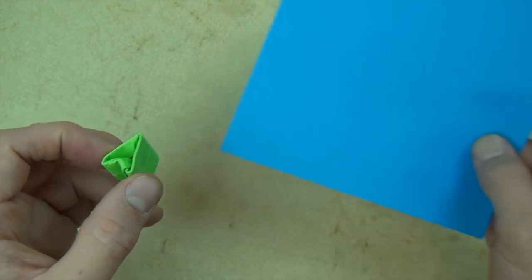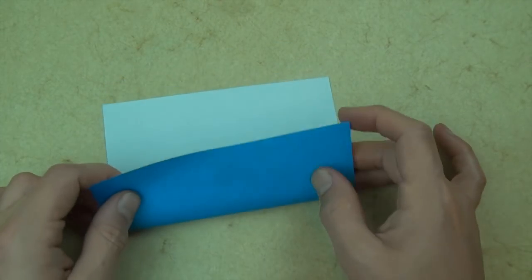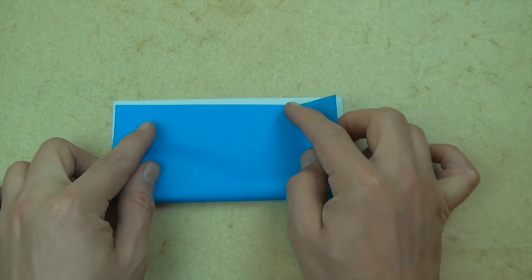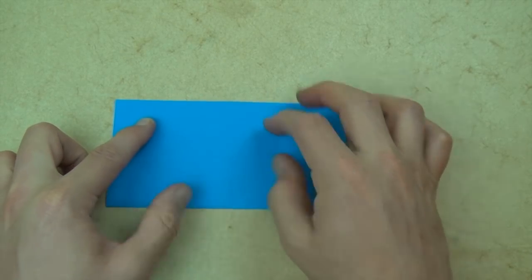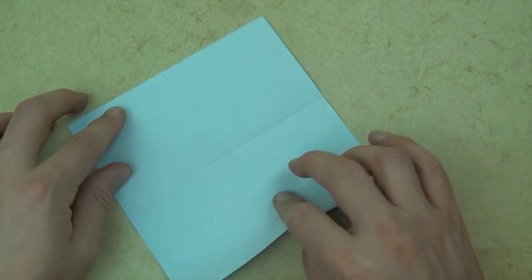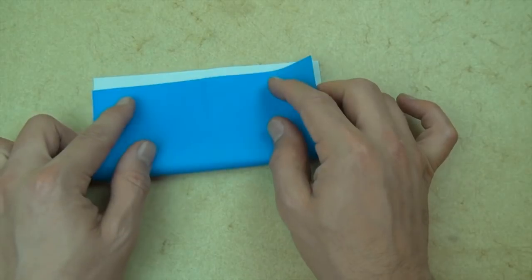Ready, set, here it goes. Alright, so for this model, I'm going to use a 6-inch square of kami, white side up. And now let's fold in half. And now unfold and rotate 90 degrees, and let's fold in half in this direction.